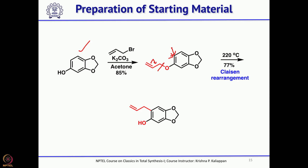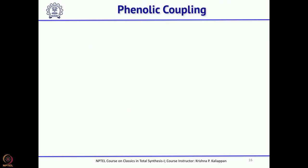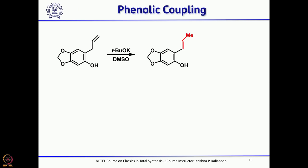Using Claisen rearrangement, one can easily get the rearrangement product. However, the double bond is still in the terminal position, and it should be moved. That isomerization is done using potassium tert-butoxide and DMSO. Treating with this strong base isomerizes the double bond to get the trans alkene. So the starting material is ready, and the next key step is phenolic coupling.